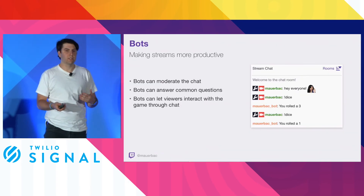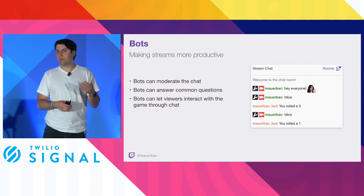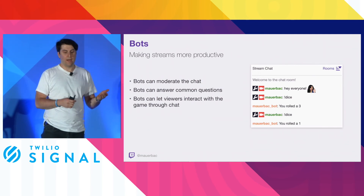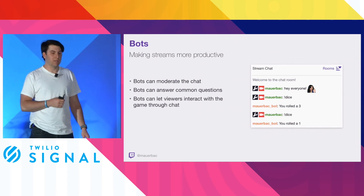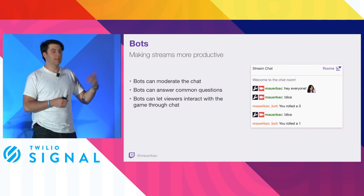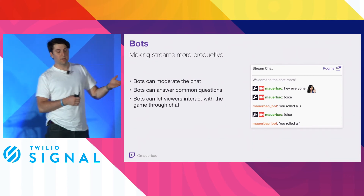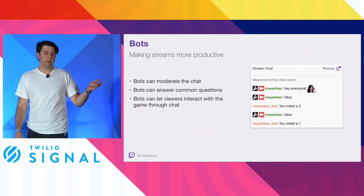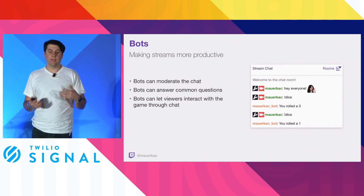The first way to build interaction on Twitch is through bots. You can write your own bot—it's a programmatic way to use commands to respond in chat. For example, a 'dice' command will print a random number from one to six, similar to a Slack bot. There are also more interesting use cases: bots to moderate chat, answer common questions, or even use chat to control what's happening in a game.